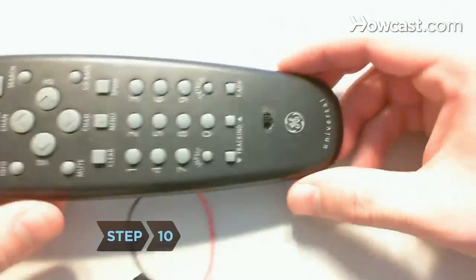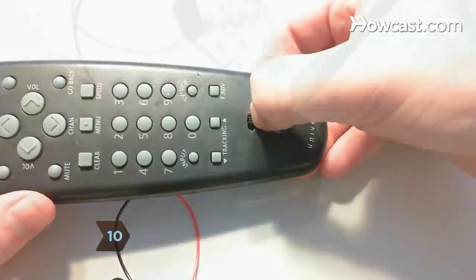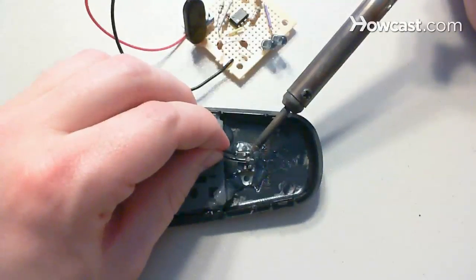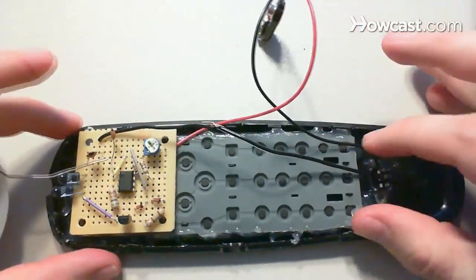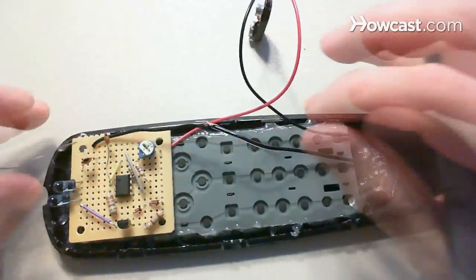Step 10: Tap into a switch in the remote to turn the jammer on and off by soldering the wire from the 9-volt's negative battery terminal to one lead of the switch. Solder the other lead to the strip on the circuit board that connects the capacitors, the LED, and port 1.